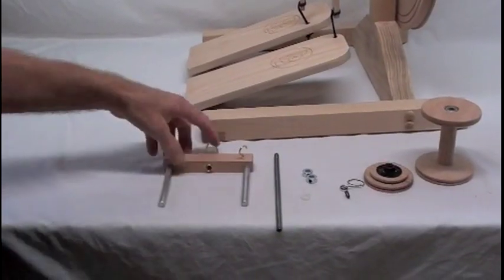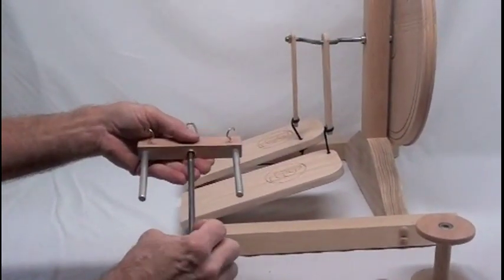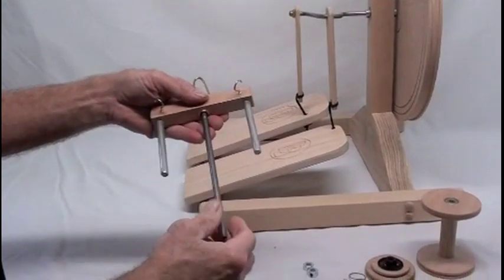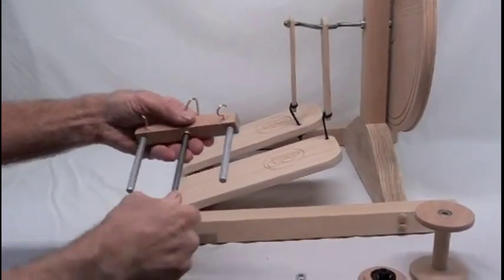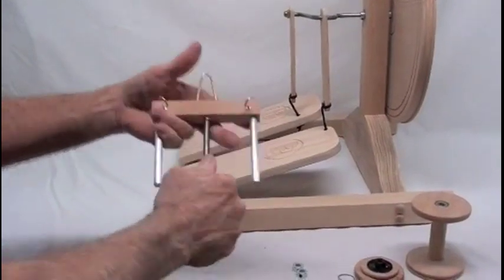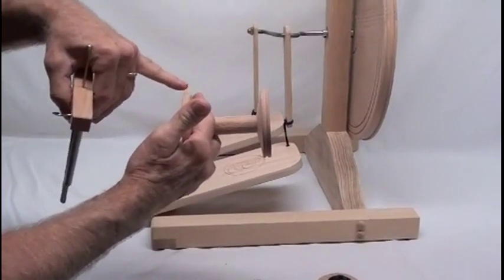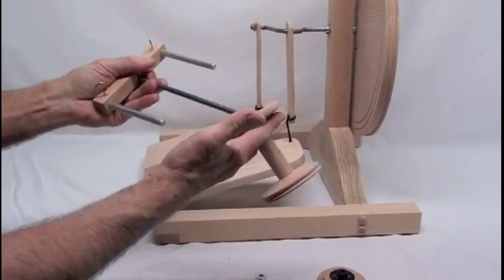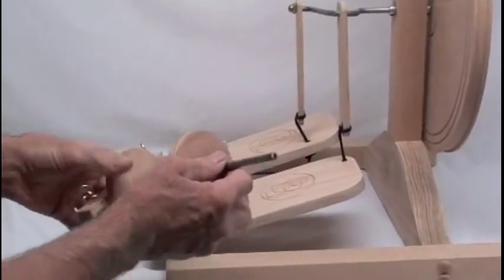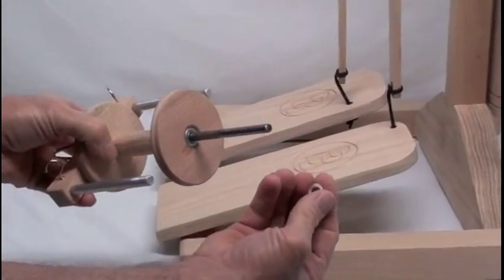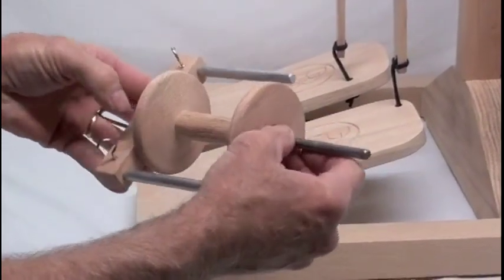To assemble the flyer, take your flyer and your flyer axle, screw the flyer axle into the flyer. Tighten it up as much as you can, just by hand. Put your bobbin on with the end that does not have the groove. Then take the little white spacer and put it onto the flyer axle and slide it up to the bobbin.